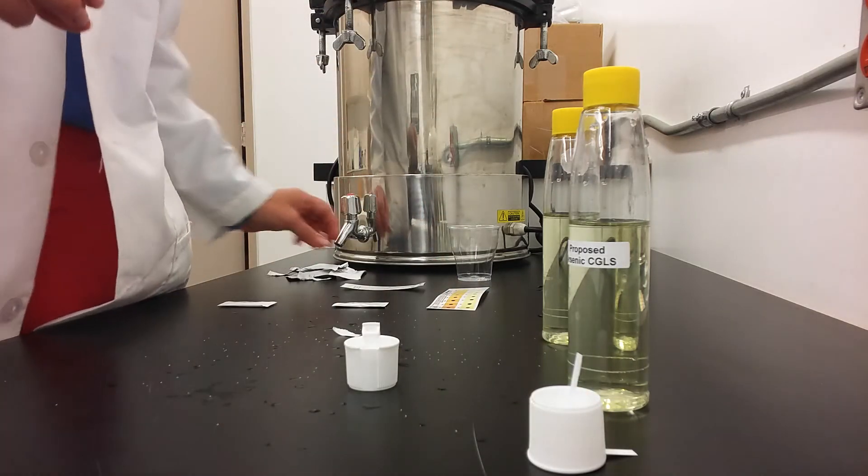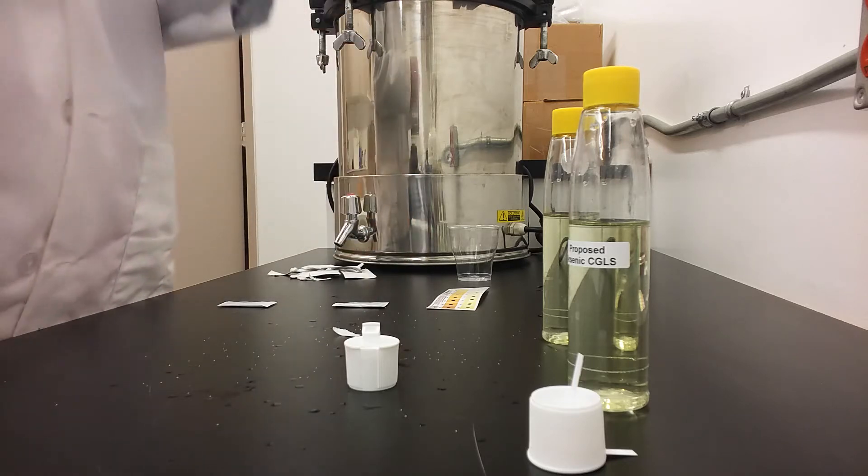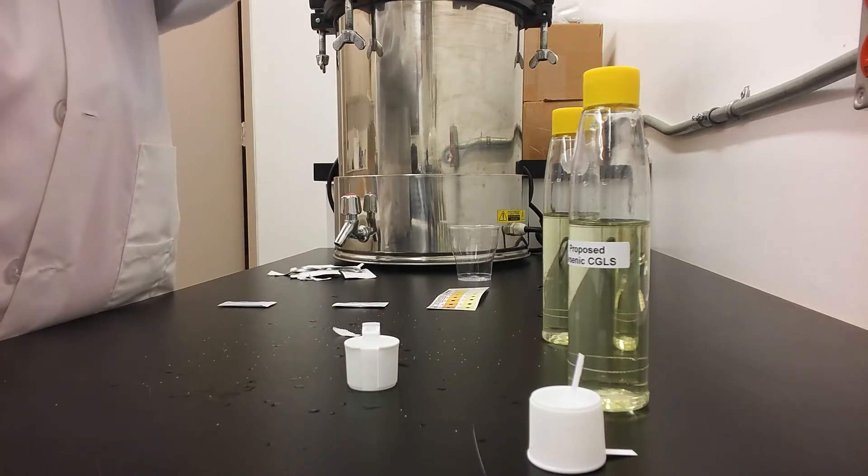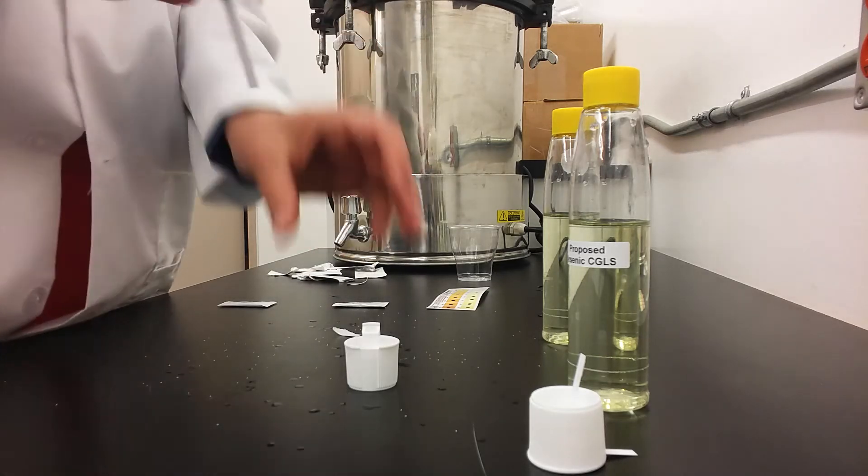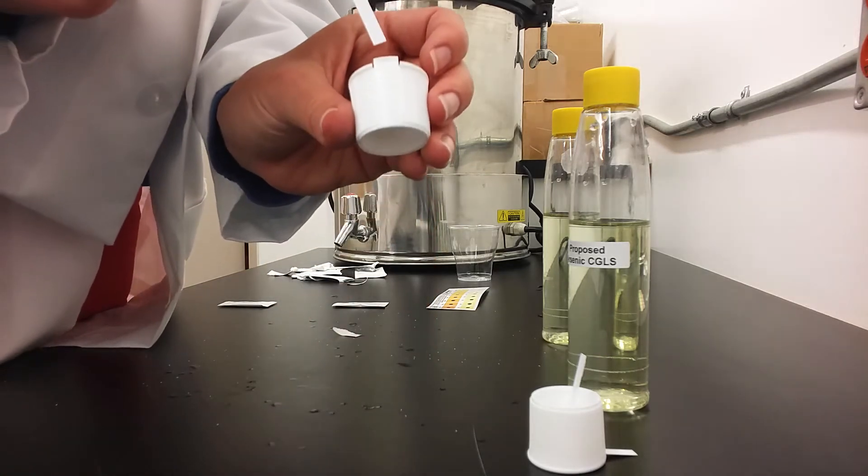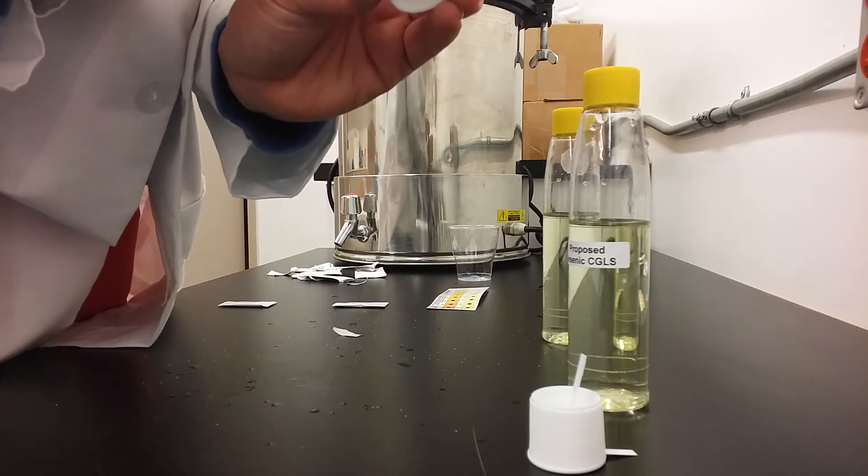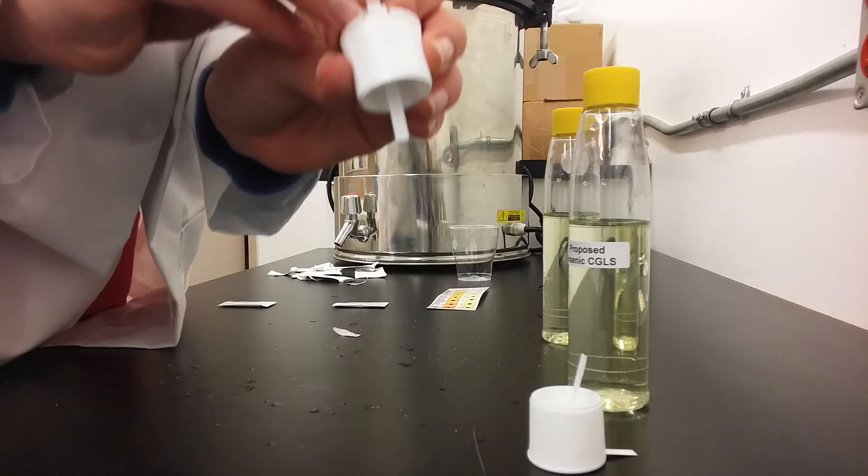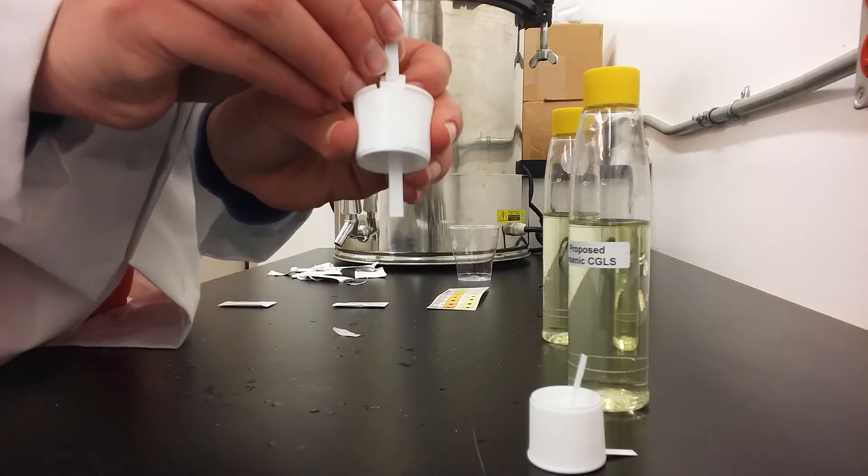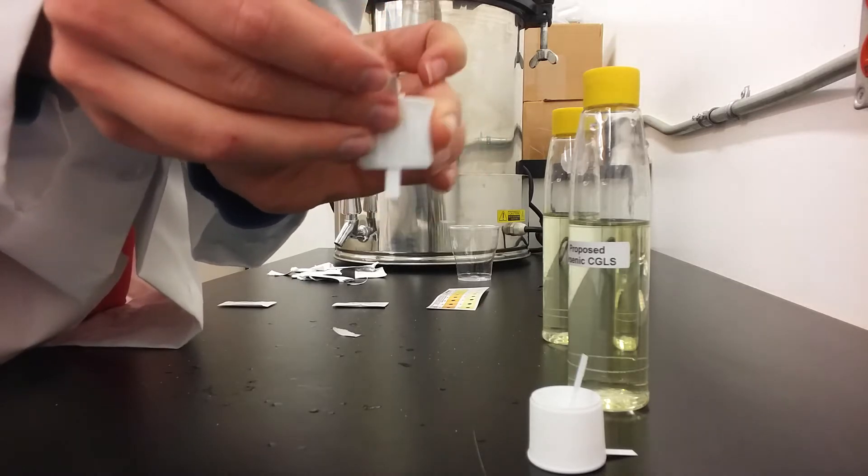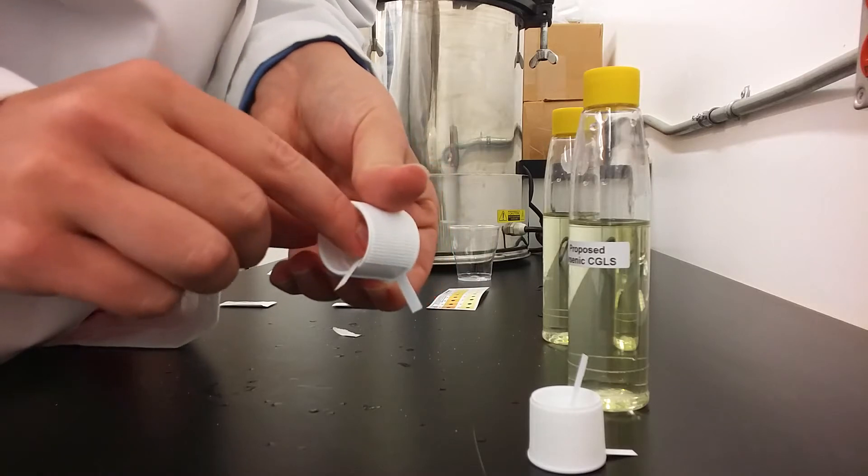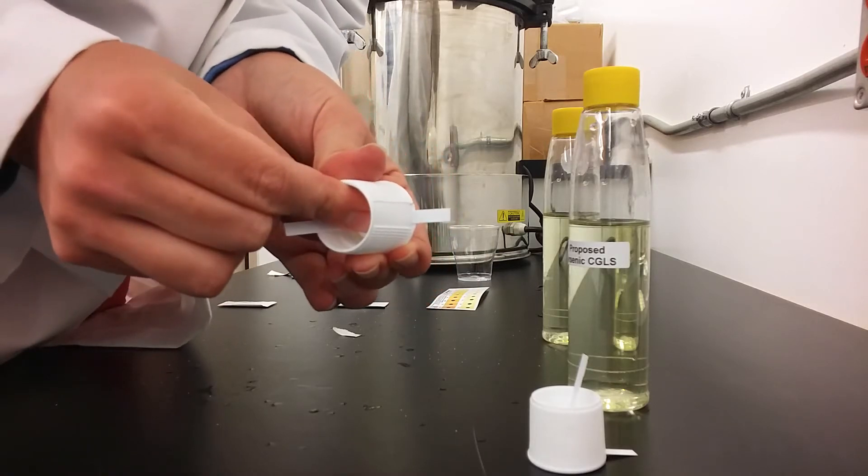We will repeat that with the second test strip, again being careful not to touch the cotton pad indicator at the bottom. Then you will fold it down, inserting it all the way to the red line, bending it over, and closing the cap. Then re-adjust the strip so that it is pointed straight down.